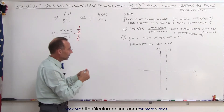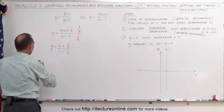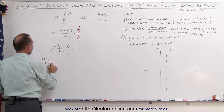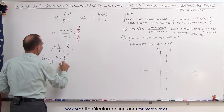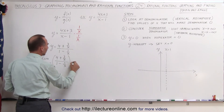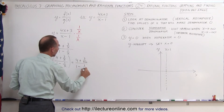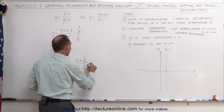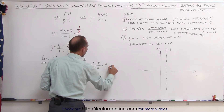Now we find the limit as x approaches infinity of (4 plus 3/x) divided by (1 minus 1/x). When we let x go to infinity, we get 4 plus 3 divided by infinity, over 1 minus 1 over infinity. Whenever you divide a number by infinity, you get 0. So this becomes 4 plus 0 divided by 1 minus 0, which is simply 4 divided by 1, or 4.